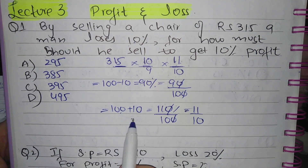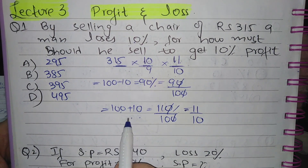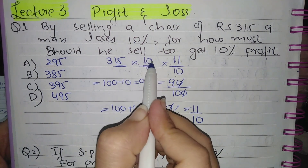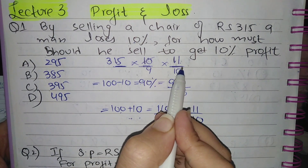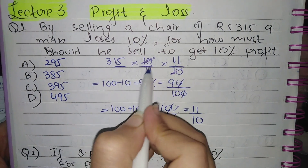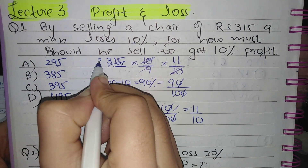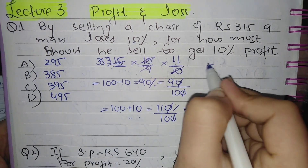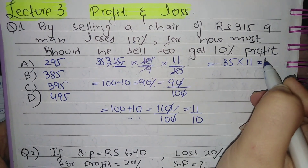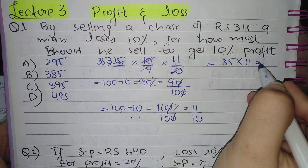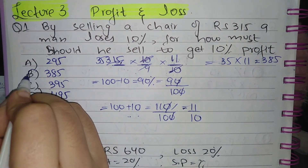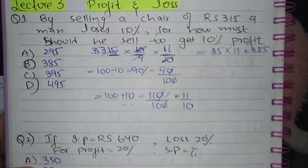Always add the profit percentage with 100 and then simplify. Whenever you solve this type of question, certain terms will cancel out. So 35 multiplied by 11 gives 385. Therefore option B is the correct answer.